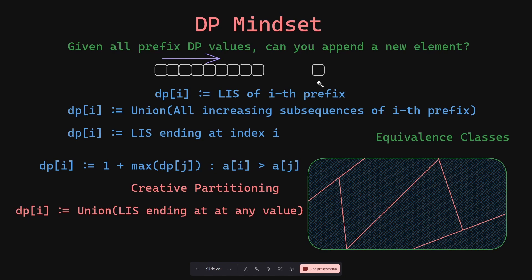To perform the transitions, you take a guess on the last element in the subsequence at index j, then expand that equivalence class to the one that ends at index i. This definitely works, but the time complexity is O(n²). How do we optimize it further?